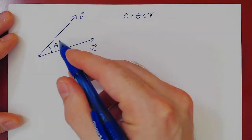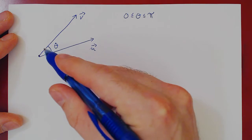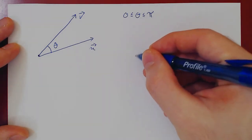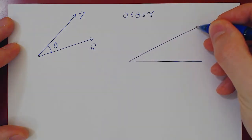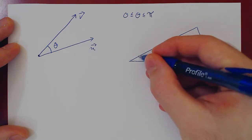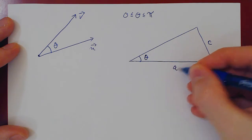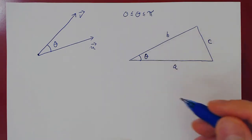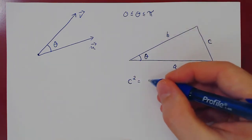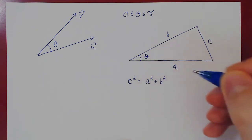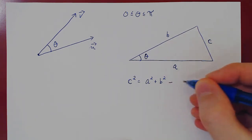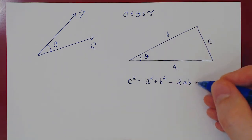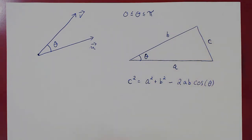Before we try to figure out how to connect the vectors with the angle between the two vectors, recall the law of cosines. If I give you an arbitrary triangle — it doesn't have to be a right triangle — suppose the angle here is theta, and we call this side c, and the other two sides a and b. The law of cosines says that c squared, the side opposite to the angle, is equal to a squared plus b squared minus 2ab cosine of theta.